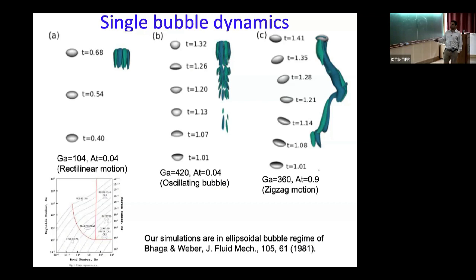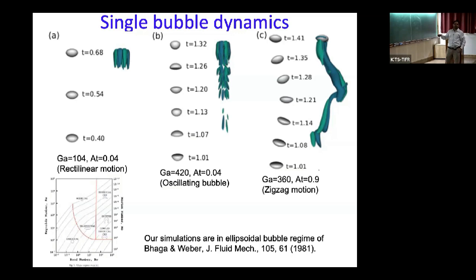The first step was to look at single-bubble trajectories. As you increase the Galilei number, the flow structure changes: at low Galilei the bubble has a wobbling motion; increasing further, the wobbling decreases and the bubble makes a meandering zigzag motion with a horseshoe vortex shed behind it. One could then wonder whether the collective behavior of many bubbles yields something universal or not.